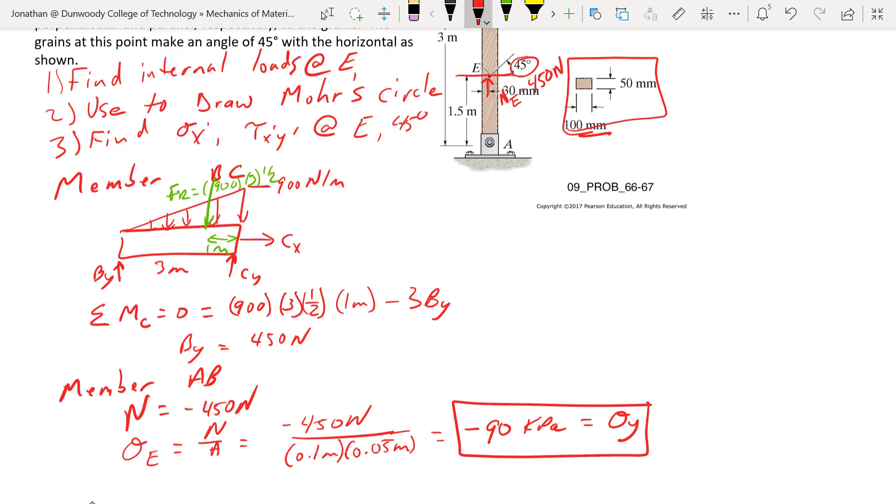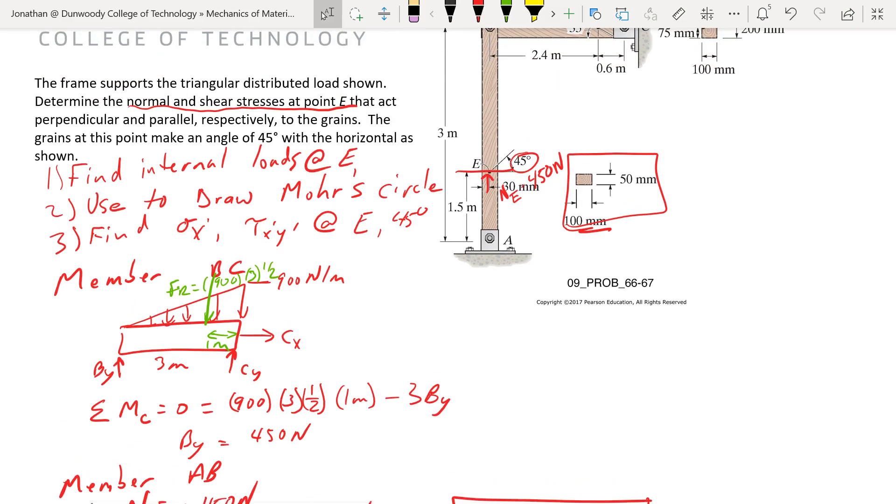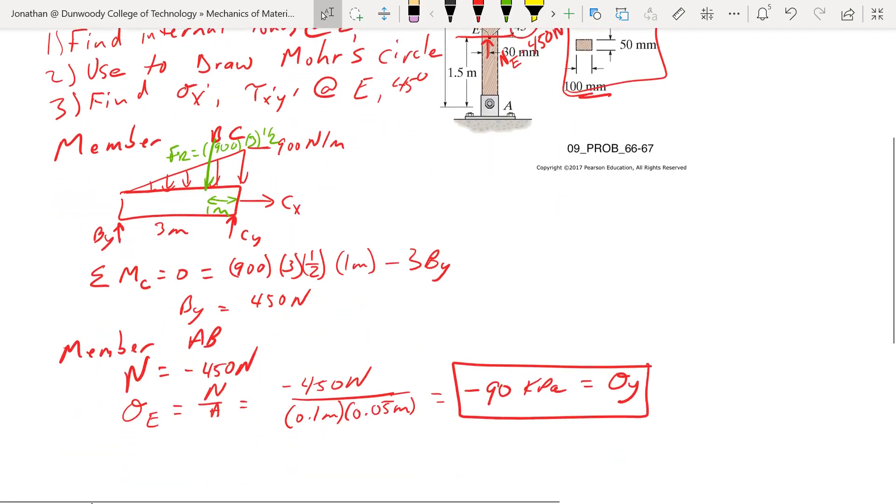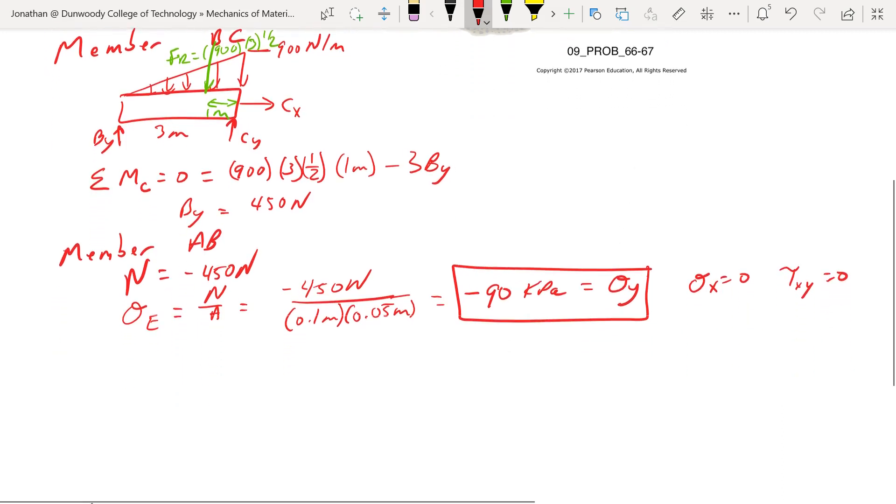Is there anything in the x direction? Do we have any shear here? Not as we've shown it so far. There's no x loads here. Sigma x is going to be 0. And we don't have any other things that would cause shear at this point. So tau xy is also 0 at this point. So now we have the pieces that we need to draw, or start working on Mohr's circle.